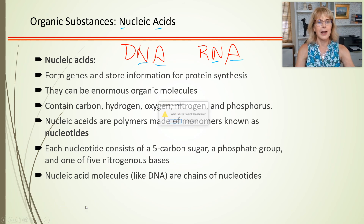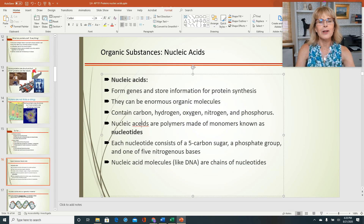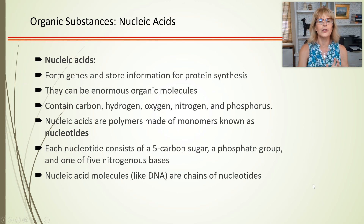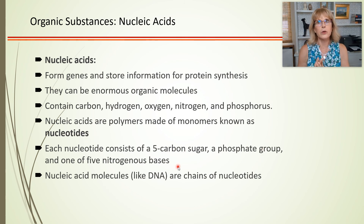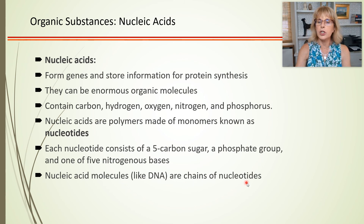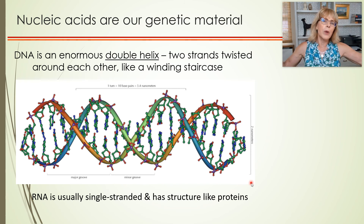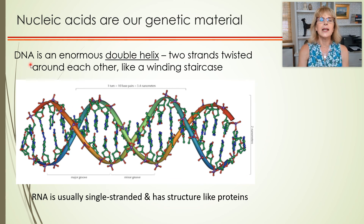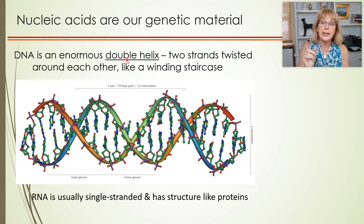The polymer that is DNA is made up of monomers called nucleotides. Every nucleotide is made out of a phosphate group, a sugar, and a base. The phosphate group is the same for DNA and RNA; the sugar is different; and the nitrogenous bases have some overlap between DNA and RNA. Nucleic acid molecules like DNA are chains of nucleotides — that's what we mean when we say DNA is a polymer.